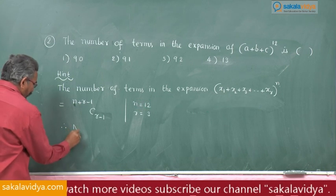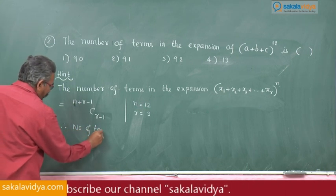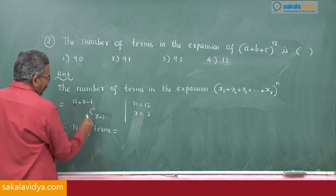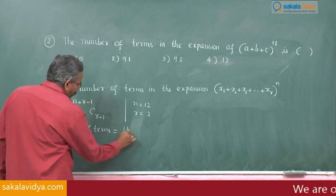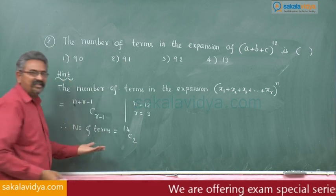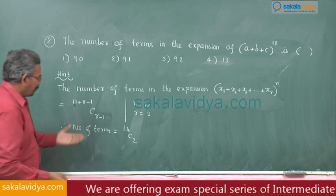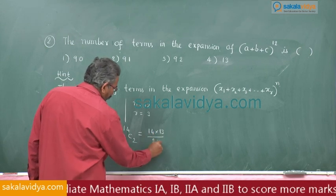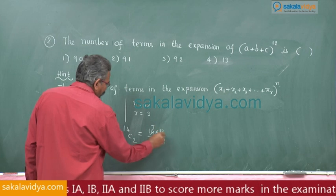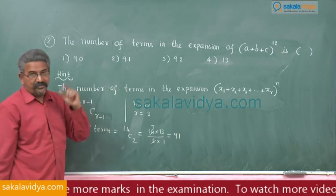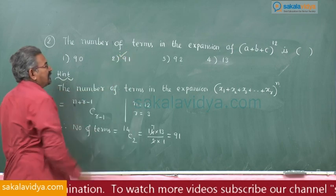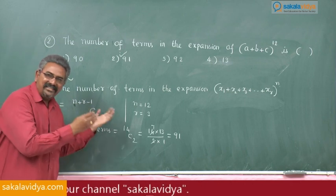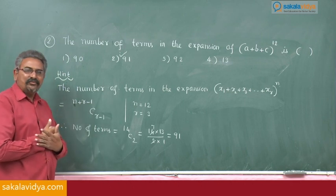Therefore, number of terms of the given problem is equal to (12 + 3 - 1)C(3 - 1) = 14C2. 14C2 is equal to 14 × 13 / (2 × 1) = 91, which is the right option. Yes, second one is the right option. Very easily we can solve this problem. Shall we move to next problem?